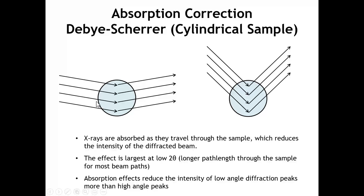Depending on the material, the wavelength of radiation, and the geometry of your experiment, the absorption effects could be quite large. For a strongly absorbing sample, all of the scattering comes from just the outside layer of the sample. At low angles, only X-rays scattered off the very top and bottom — with minimal path length through the sample — make it to the detector. At very acute angles, more X-rays can scatter without passing through much of the sample. So there's an angular dependence to the absorption correction — for a Debye-Scherrer transmission experiment, the effect is largest at low 2-theta and decreases at high 2-theta angles.